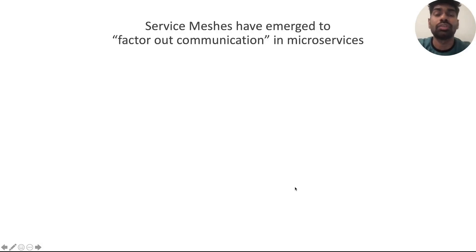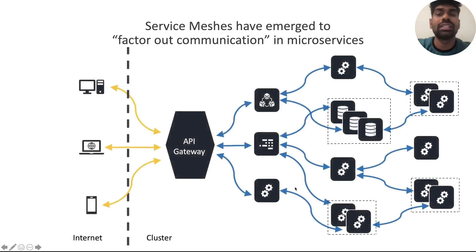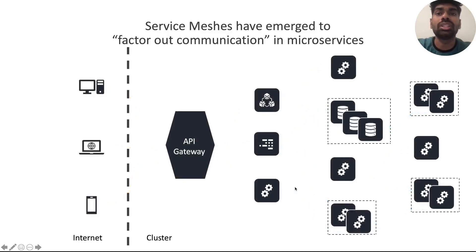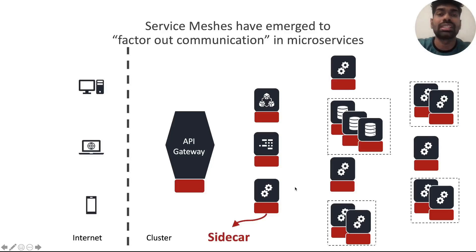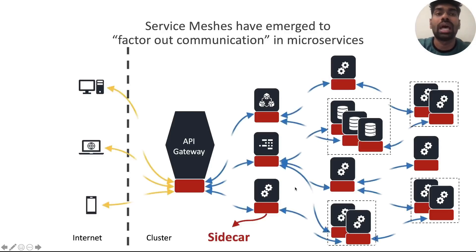So in order to factor out this common communication functionality that all these services need, service meshes have recently emerged. Service meshes take this existing microservice and convert it into an architecture where all the communication functionality has been factored out and placed within a separate process called a sidecar. As you can see in this figure, every microservice instance is now paired up with a sidecar which performs all inbound and outbound network communication.